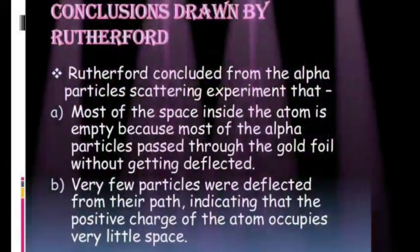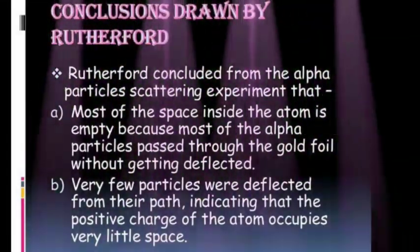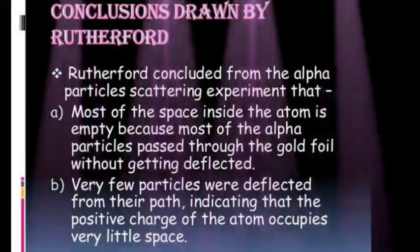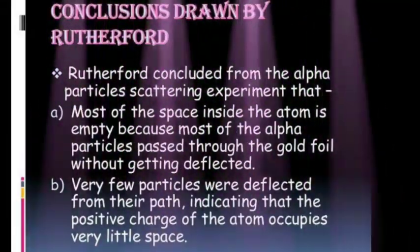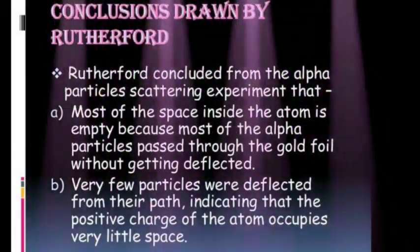See students, an established law of physics states that an electrically charged body revolving in a circular orbit has decreasing energy. According to this law, the atom described in Rutherford's model turned out to be unstable. In reality, however, all atoms except radioactive atoms are stable. This shortcoming of Rutherford's atomic model was removed by the atomic model put forth by Niels Bohr in the year 1913.